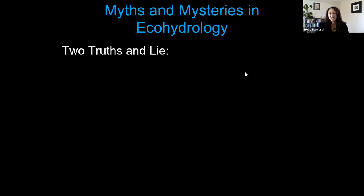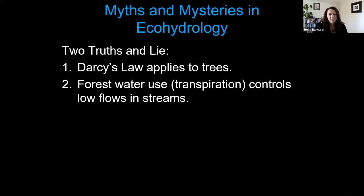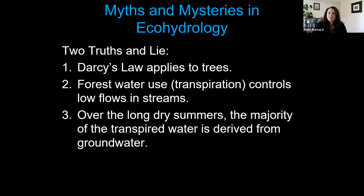Now we're going to move on to truths and lies about trees in the critical zone. Number one: Darcy's law applies to trees. Number two: forest water use, also known as transpiration, controls low flows in streams. And number three: over long, dry summers, the majority of the transpired water is derived from groundwater.